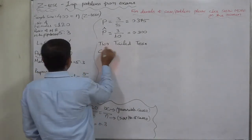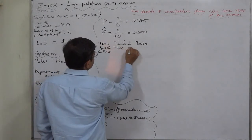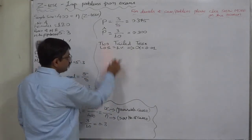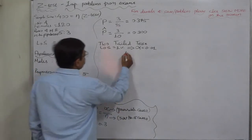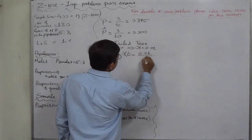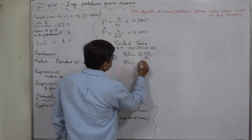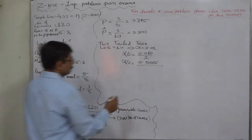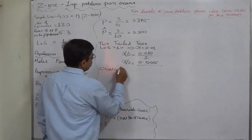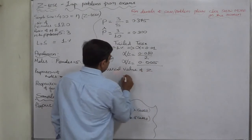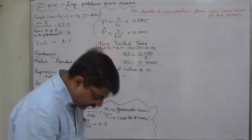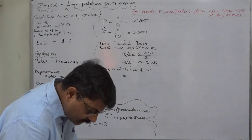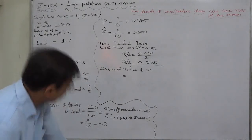Level of significance is 1%, so alpha = 0.01. For a two-tailed test we take alpha/2 = 0.01/2 = 0.005. The critical value for a two-tailed test at alpha/2 = 0.005 comes to 2.576.